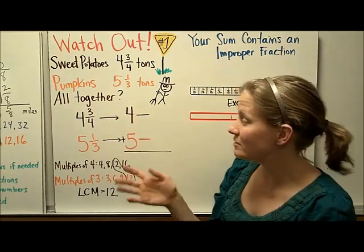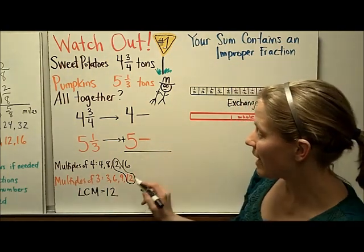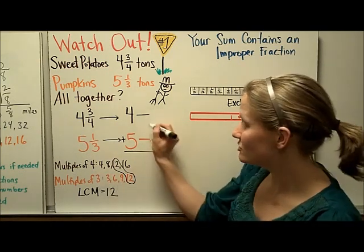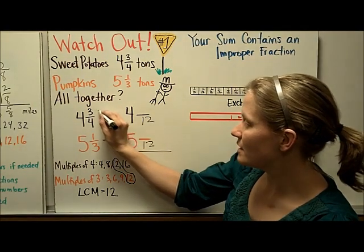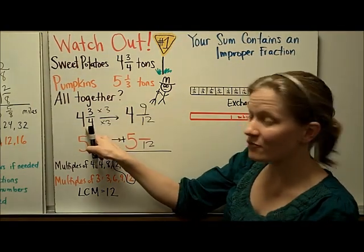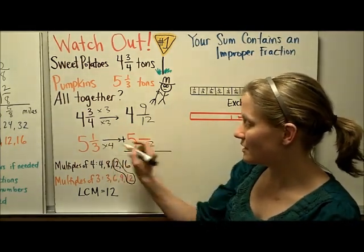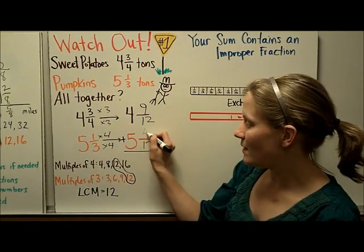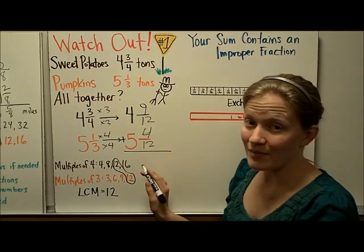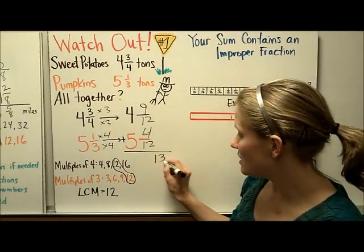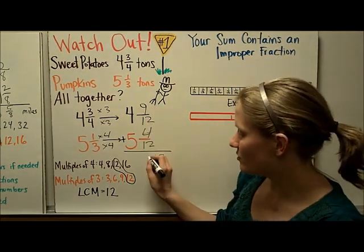So the first step would be to change your denominator so that they match. And we found that the least common multiple of 4 and 3 was 12. I had to multiply by 3 to get 12. So 4 and 3/4 becomes 4 and 9/12. And I had to multiply by 4 here to get 12. So I'm going to do that to the top. And that becomes 5 and 4/12. And then my sum I would get by adding my fractions, which would be 13/12 because 9 plus 4 is 13, and my whole number would be 9.